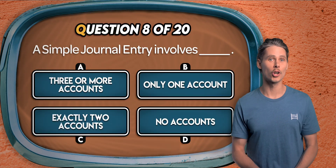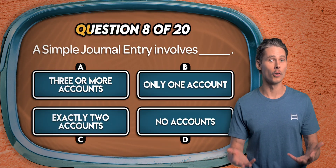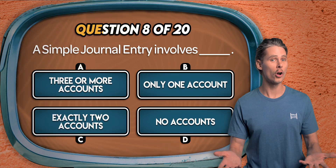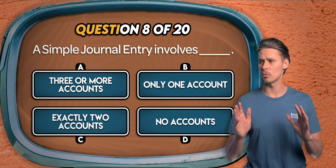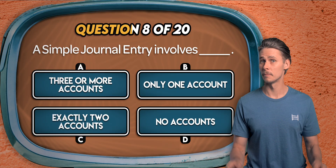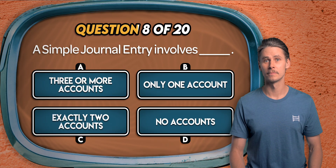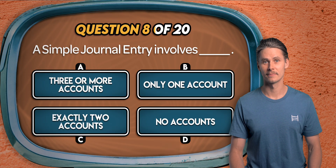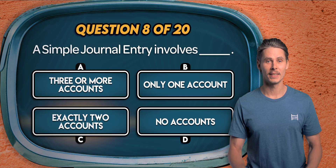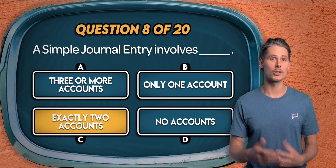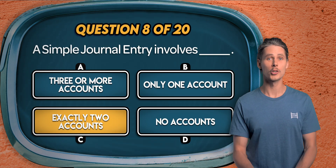Question 8. A simple journal entry involves: three or more accounts, only one account, exactly two accounts, or no accounts at all? It's C. Simple journal entries only involve two accounts.